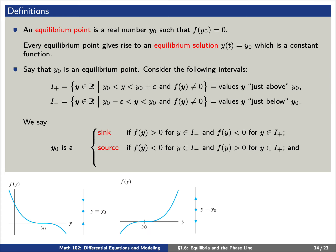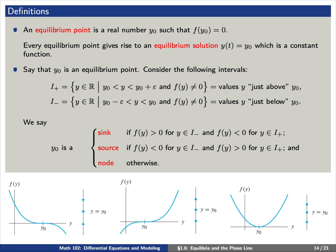We say that y₀ is a source if f(y) is less than 0 just below y₀ and greater than 0 just above y₀. On the phase line, the two arrows point away from the equilibrium point y₀ — that is the idea of a source. And finally, we have the idea of a node. A node means that it doesn't fall neatly into one of these two cases — one arrow points toward the equilibrium point while the other points away from it.